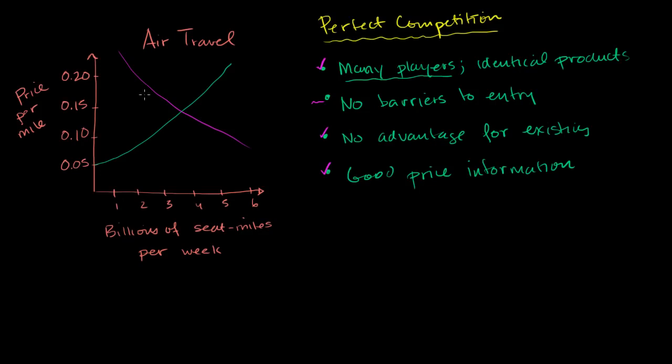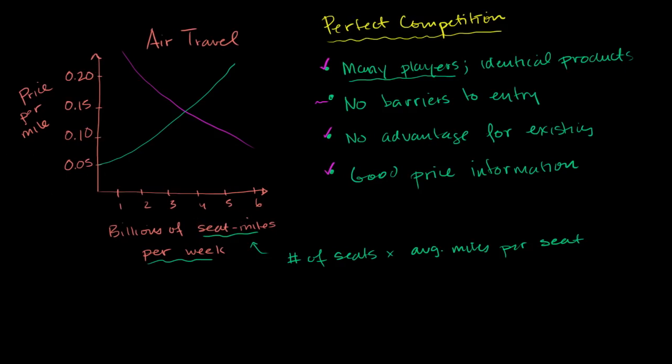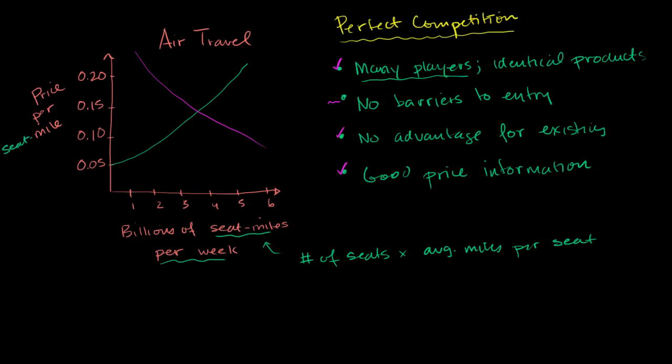And you can see that from this supply and demand curve right over here. So on this axis, the horizontal axis, this is the quantity. This is a measure of the quantity of airline service. And we're measuring it in billions of seat miles per week. And I know that sounds like a strange thing, but really, we're just saying, in a given week, tell me all of the seats that are in use and multiply those number of seats, the number of seat miles in a given week, the number of seats times the average miles per seat in a given week. On this axis, this is the price. This is price per seat mile.